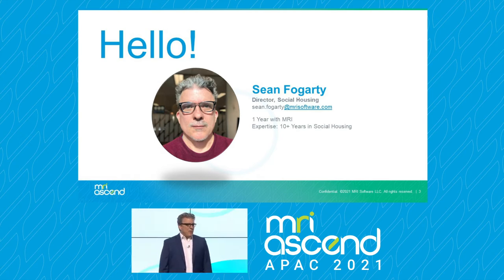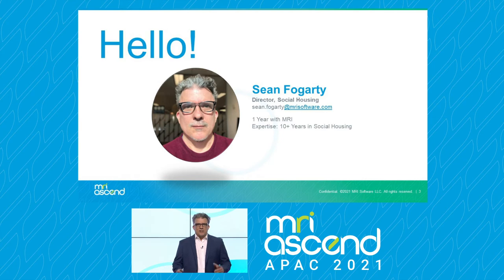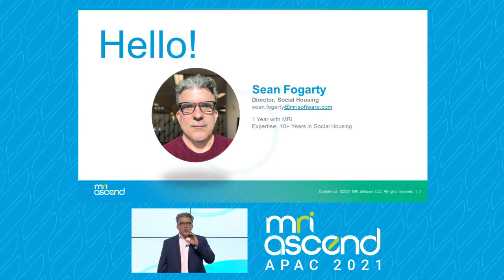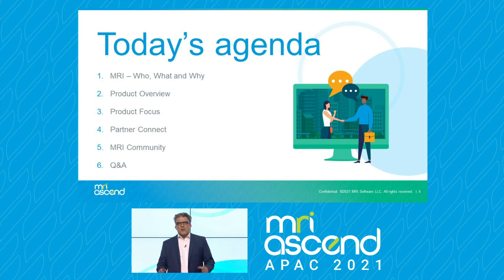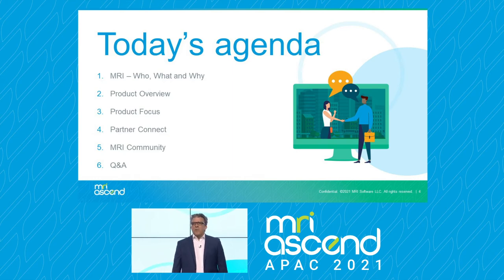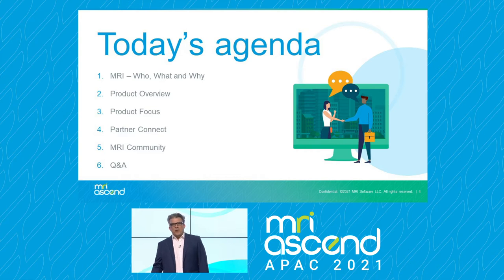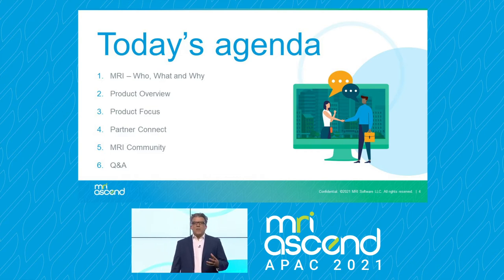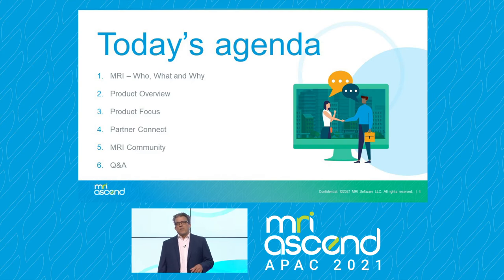Alright, so that's enough about me. What we're going to do now is run through today's agenda. We're going to start off with some information about MRI — who we are, what we do and why we do what we do. We'll then move on to the product segment of the session, providing a product overview focusing on some specific solutions and product updates. We'll also provide some detail around our partnership program as well as what it means to be part of the MRI community.